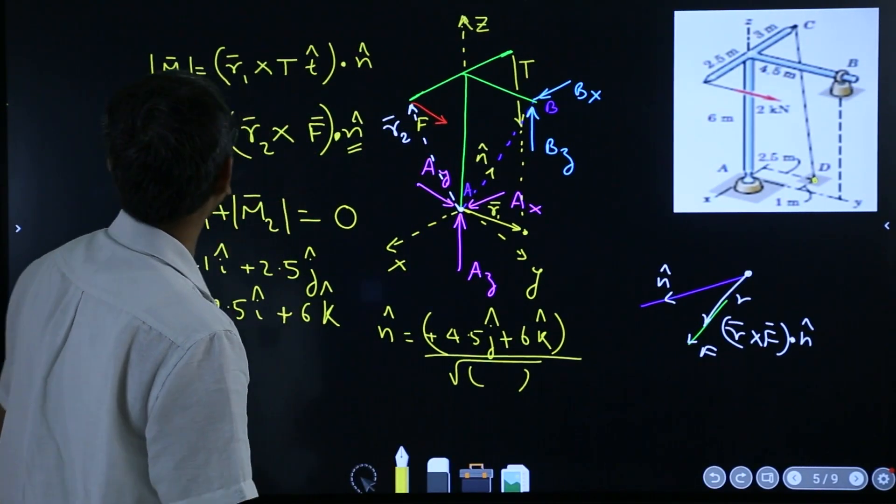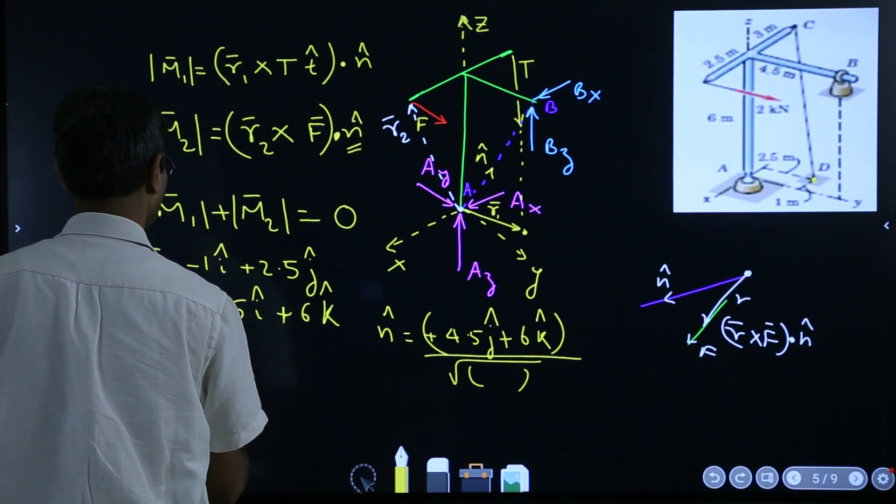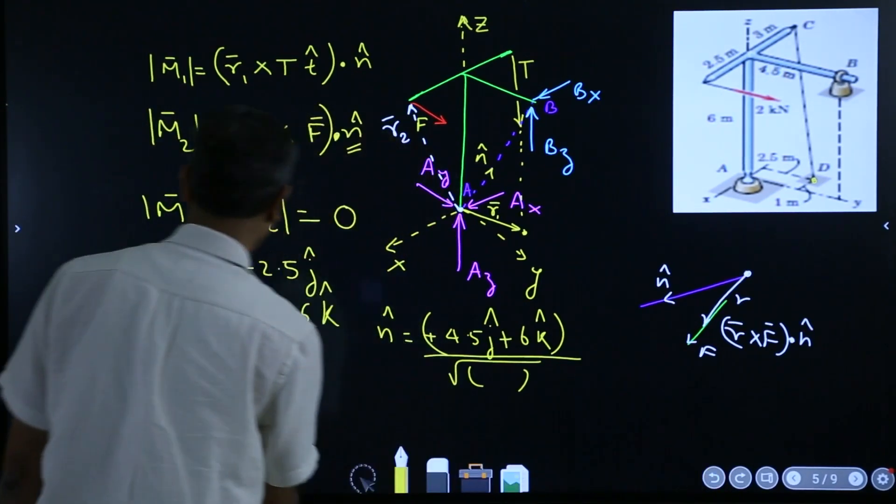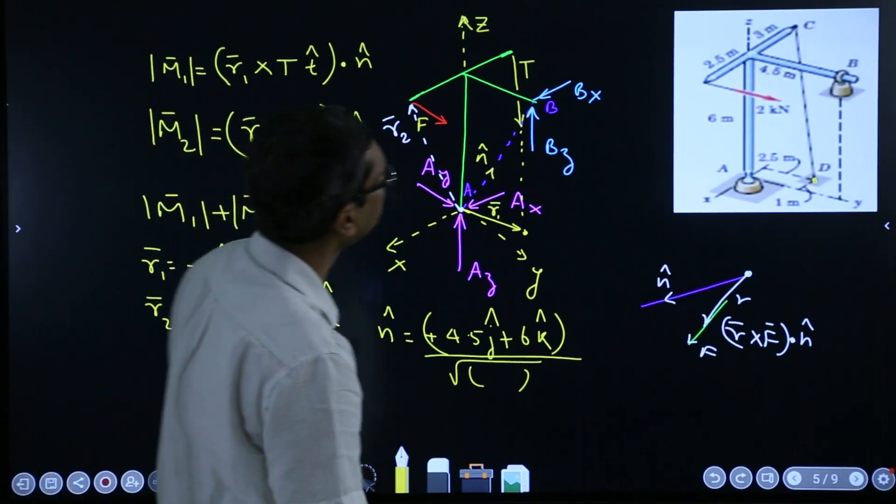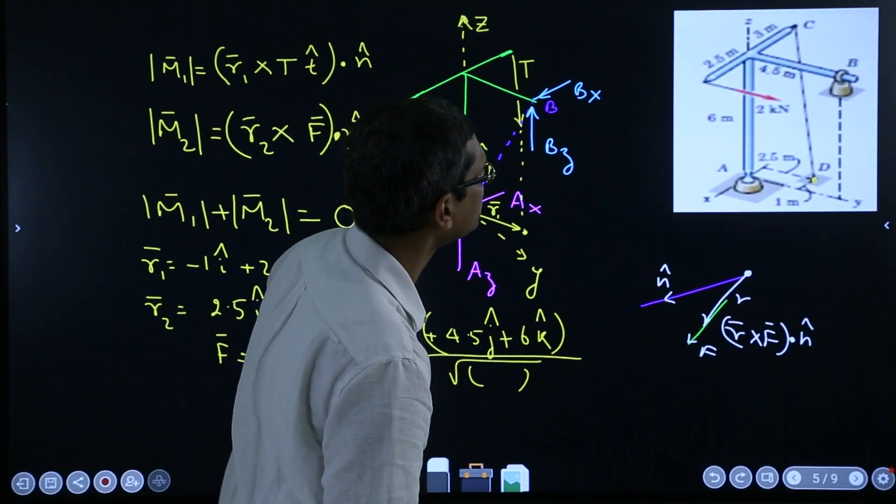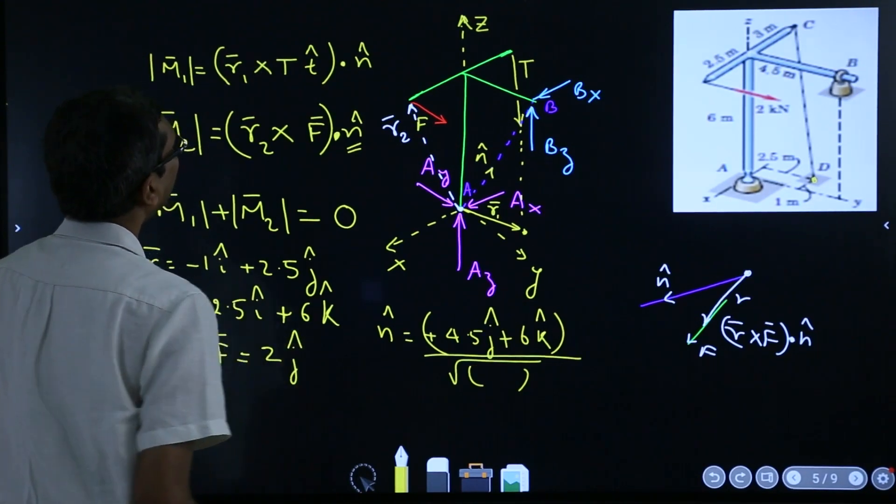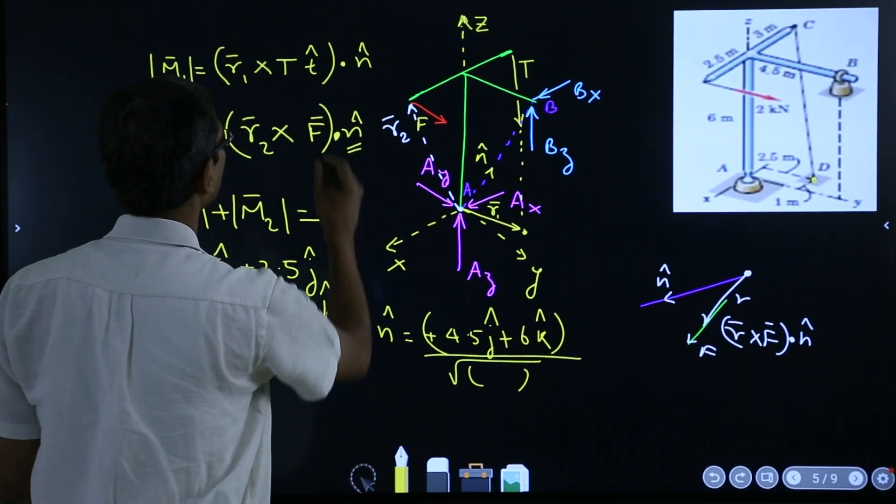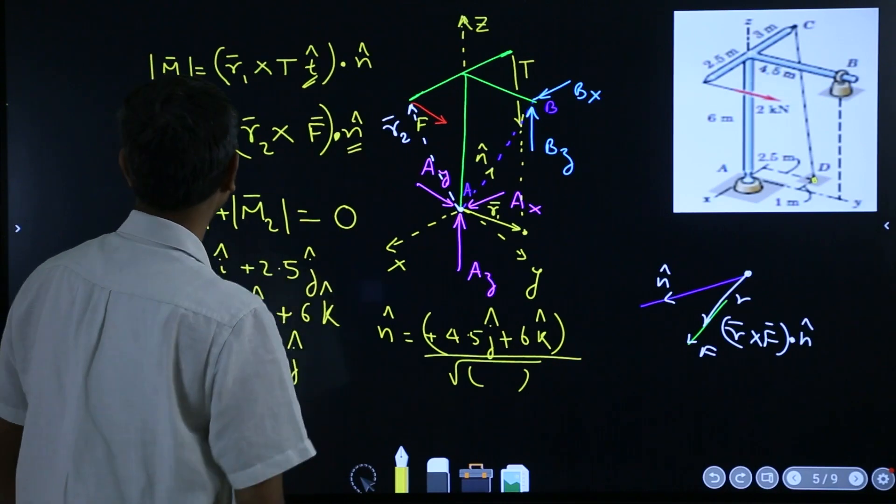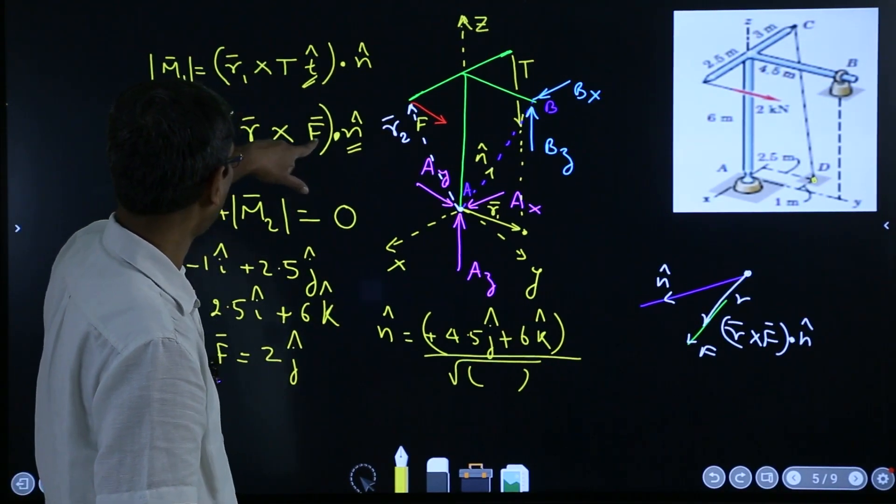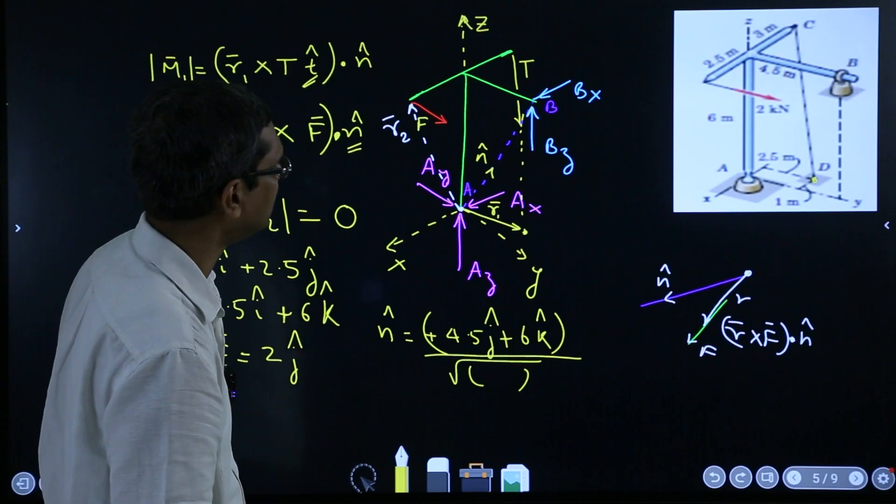And then F is what? F is known to be 2 times J. 2 J. And only thing now remaining is T. Isn't it? Everything else we have written. R1, R2, F, N. Now remaining thing is T.